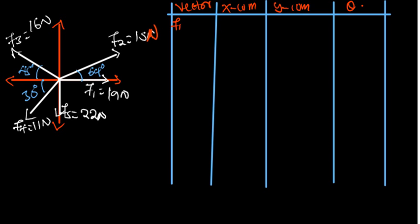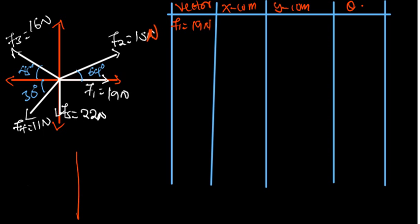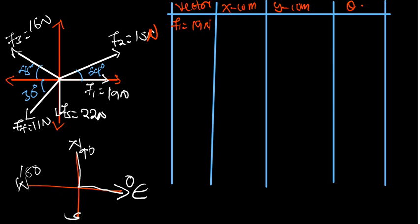Our F1 is 19 Newtons. To resolve a vector into its x-component, we use F1x = 19 cos(θ). The angle used is measured from the positive x-axis to the vector. A vector pointing east has angle zero, pointing north is 90°, pointing west is 180°, and pointing south is 270°.